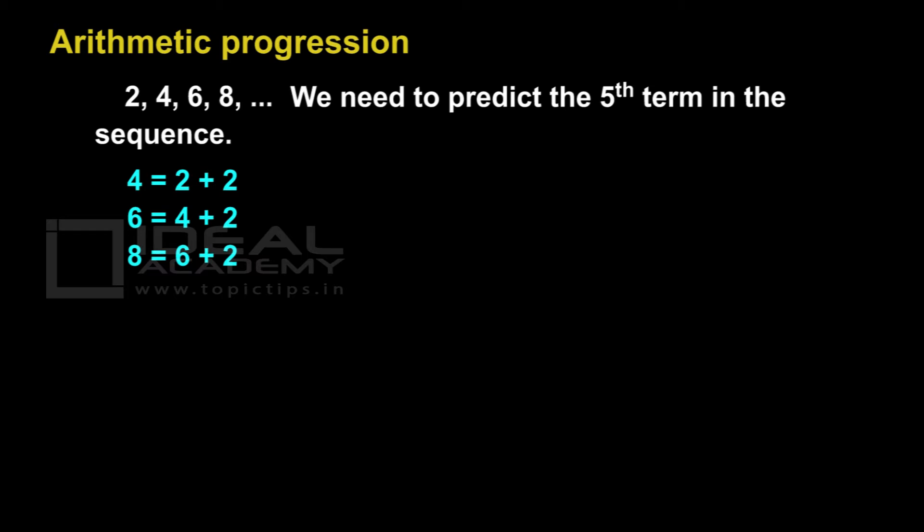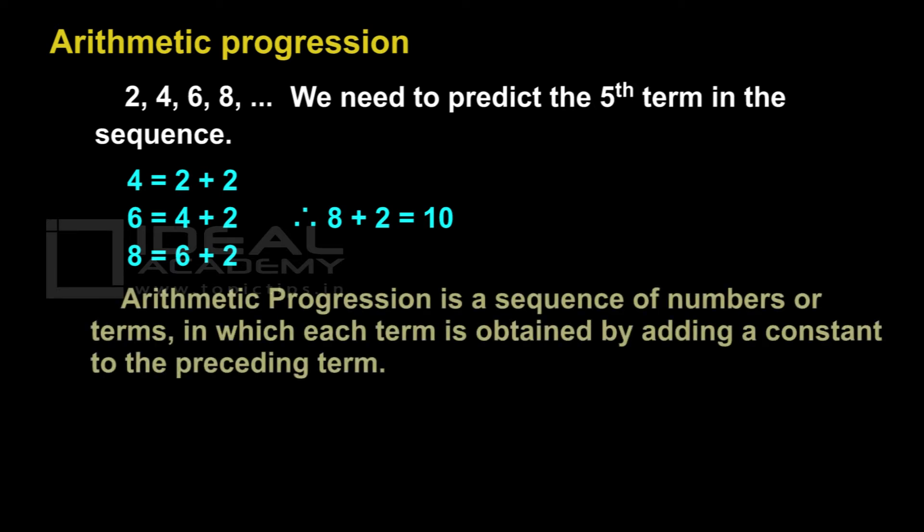So if we want to find the 5th term, we need to add the constant to the 4th term. Therefore, 8 plus 2 is equal to 10. Arithmetic progression is a sequence of numbers or terms in which each term is obtained by adding a constant to the preceding term.